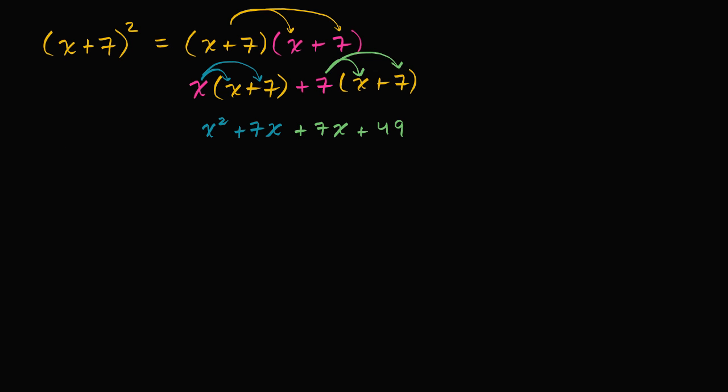We're in the home stretch. We can simplify this to x². Then these two middle terms we can add together: 7x plus 7x is 14x, so we get x² + 14x + 49. And we're done.